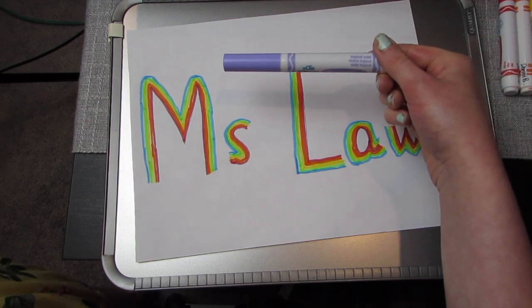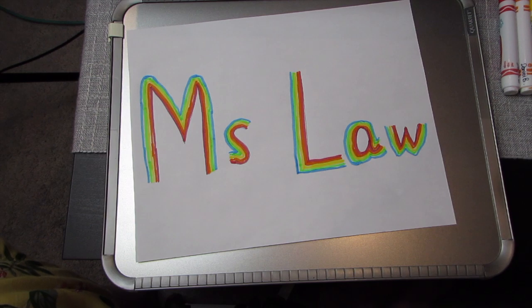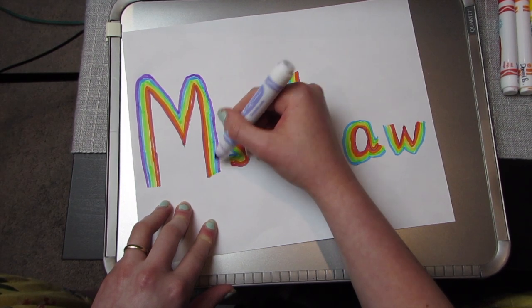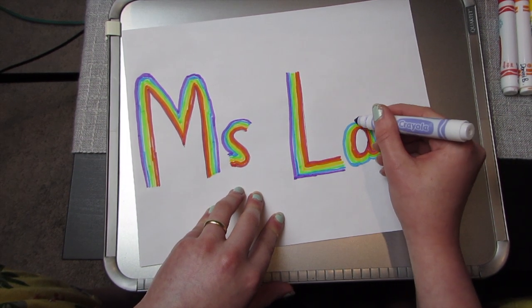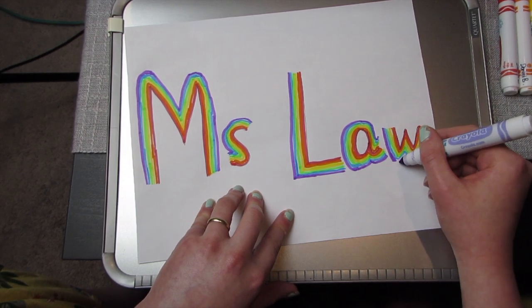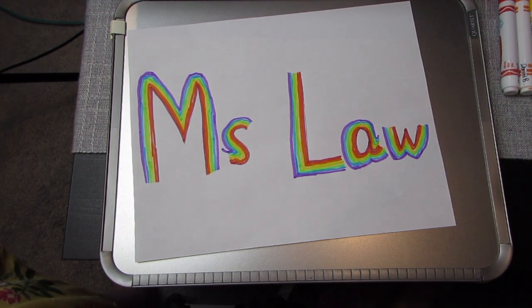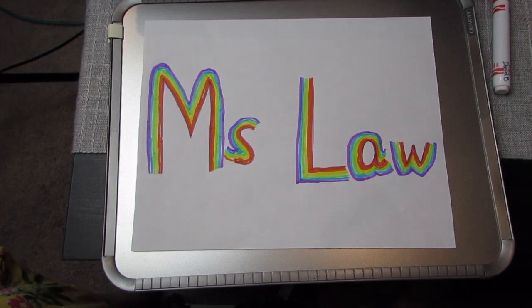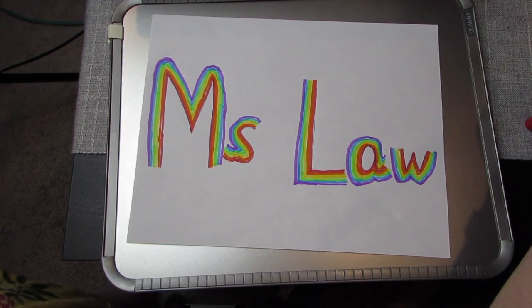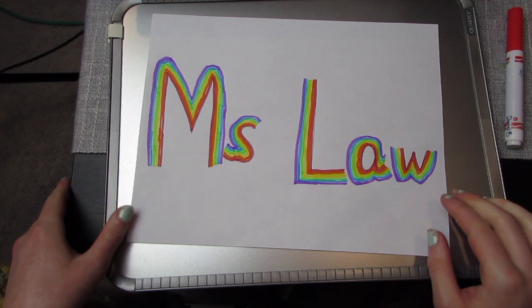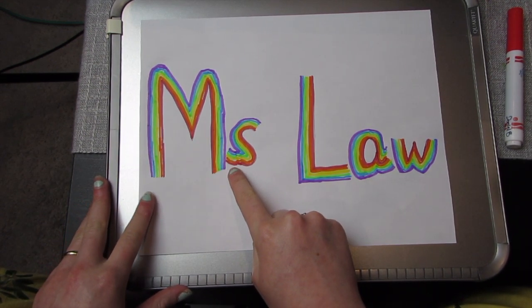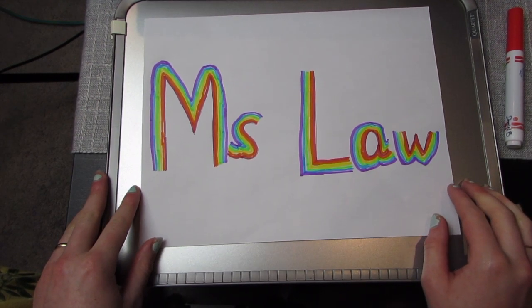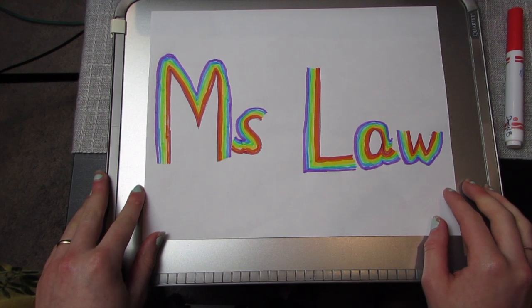And finally we're on to our purple. Thank goodness because I'm starting to run out of space. And that's how you make your name with rainbow writing. As you can see, I kind of ran out of some space and I had to add some more onto my S. But that's okay as you can add as you go. And there you go. Hope you have fun drawing your name with rainbow writing.